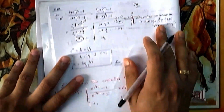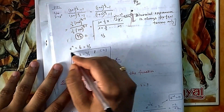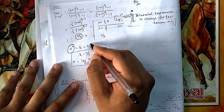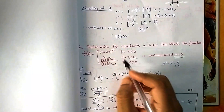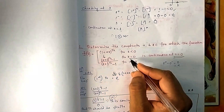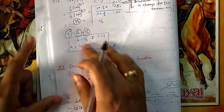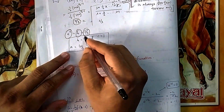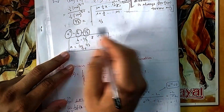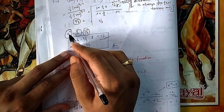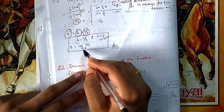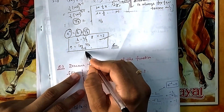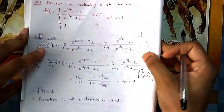For continuity at x = 0, LHL = RHL = f(0). The LHL is e^a, the RHL is 2/3, and f(0) = b. So all three must be equal: b = 2/3, e^a = 2/3, giving a = log(2/3) to base e (i.e., a = ln(2/3)). So the constants are a = ln(2/3), b = 2/3, c = 1.